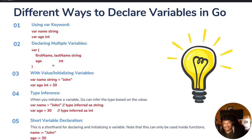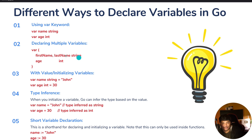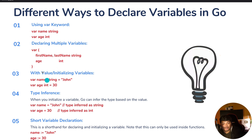The second way is declaring multiple variables. Using the var keyword, inside a block we can say first name and last name as string, and age as integer. That's another way to declare variables.